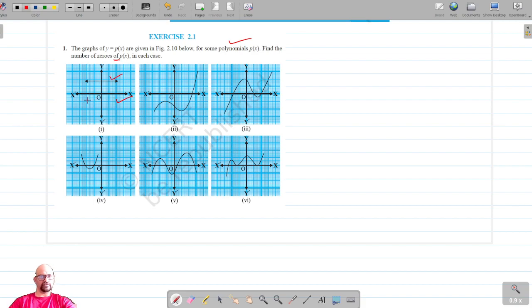It's not intersecting the x-axis, so there are no zeros for this polynomial. In the second case, the graph of the polynomial intersects the x-axis at one point.